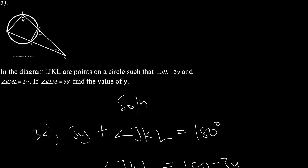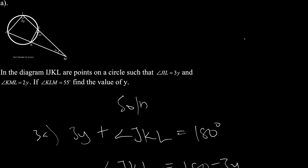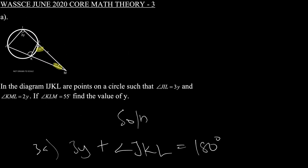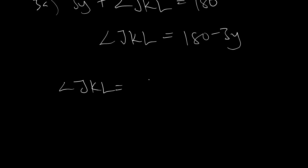We also know that the sum of two opposite interior angles of a triangle is equal to the exterior angle of that triangle. So the sum of angles 55 degrees and 2y should be equal to angle JKL. Therefore, angle JKL is equal to the sum of the opposite interior angles, which is 55 plus 2y.